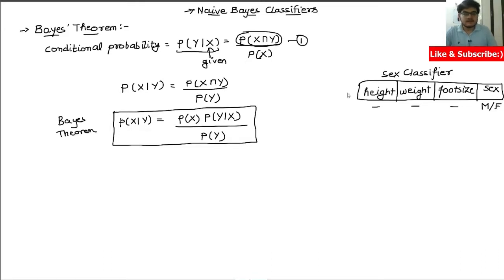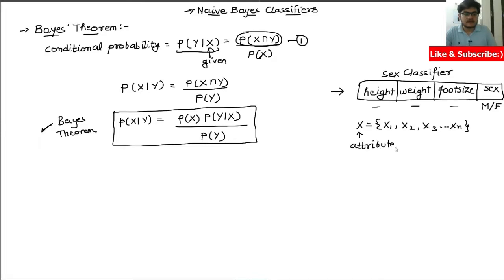Let's consider this dataset and try to make an analogy of how we can do classification using Bayes' theorem. We have features: height, weight, foot size — let's call them x1, x2, x3 up to xn. So X basically represents the attribute or feature set. Y is the output, which is the sex — male or female.